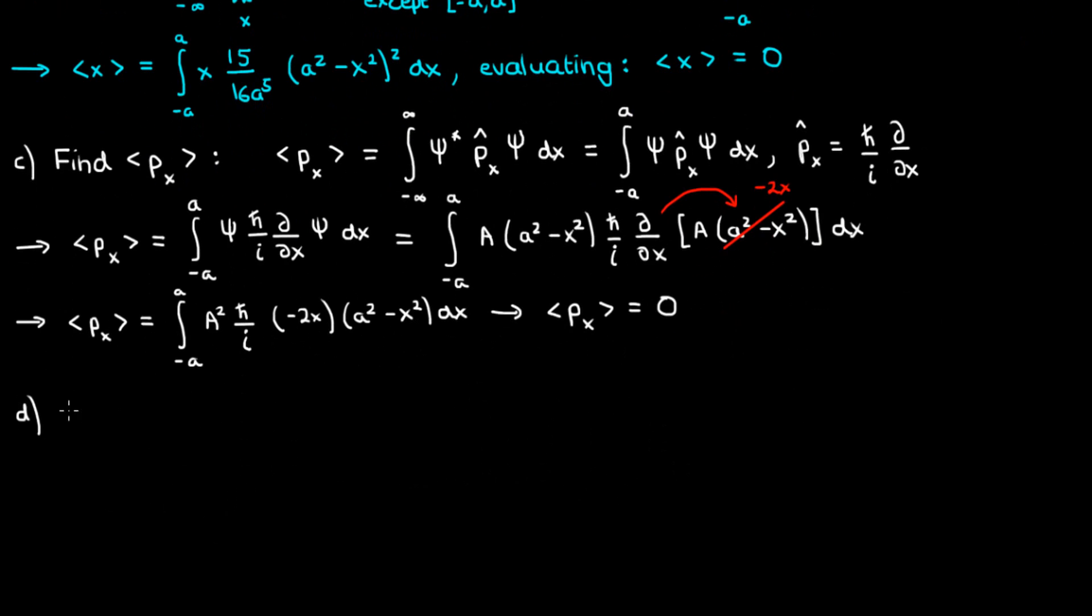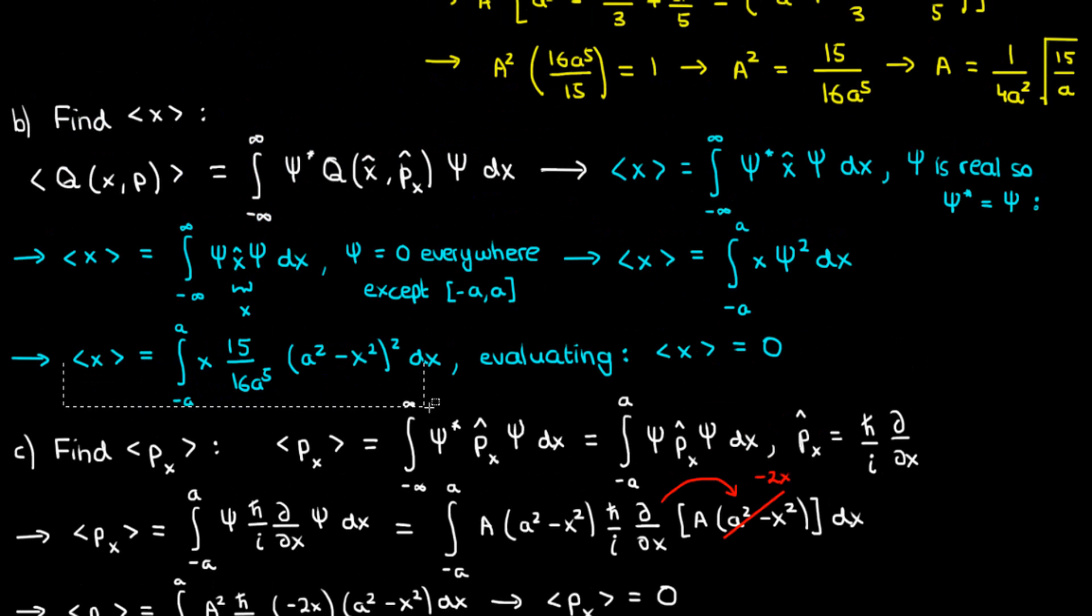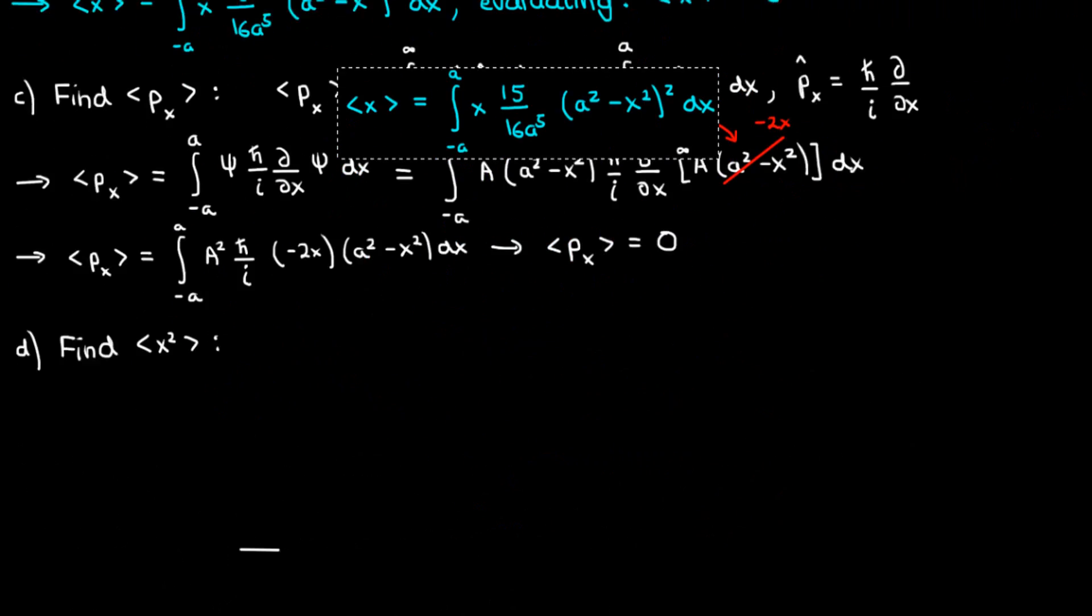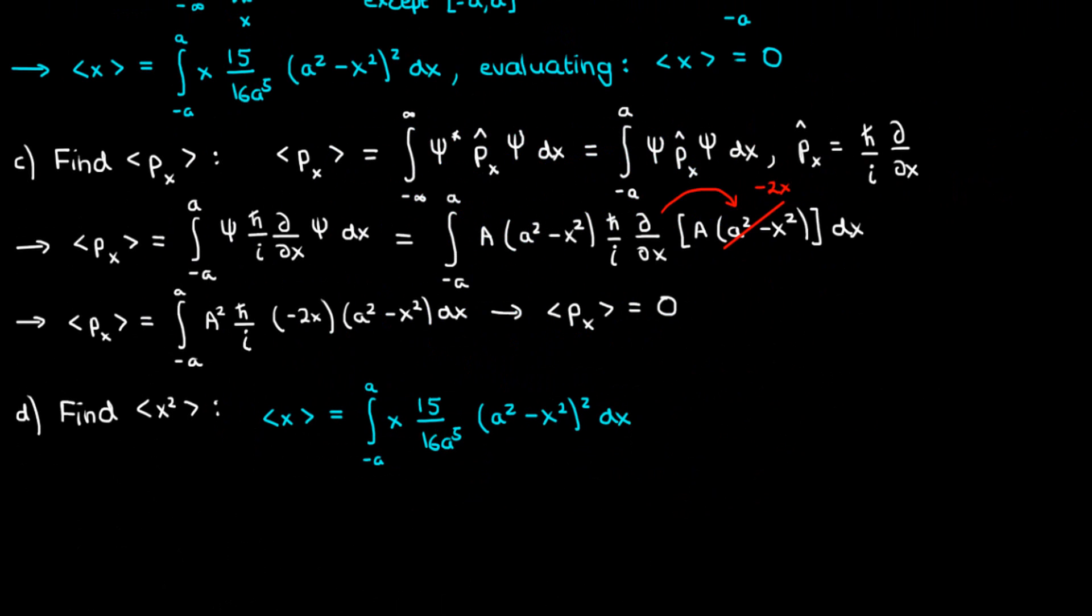Moving on to part D, now we find the expectation value of x². We already have the equation for ⟨x⟩, which I'm going to copy here. All we have to do is change x to x² in the integral to get the expression for ⟨x²⟩. The computation is left as an exercise, and the final answer is ⟨x²⟩ = a²/7.